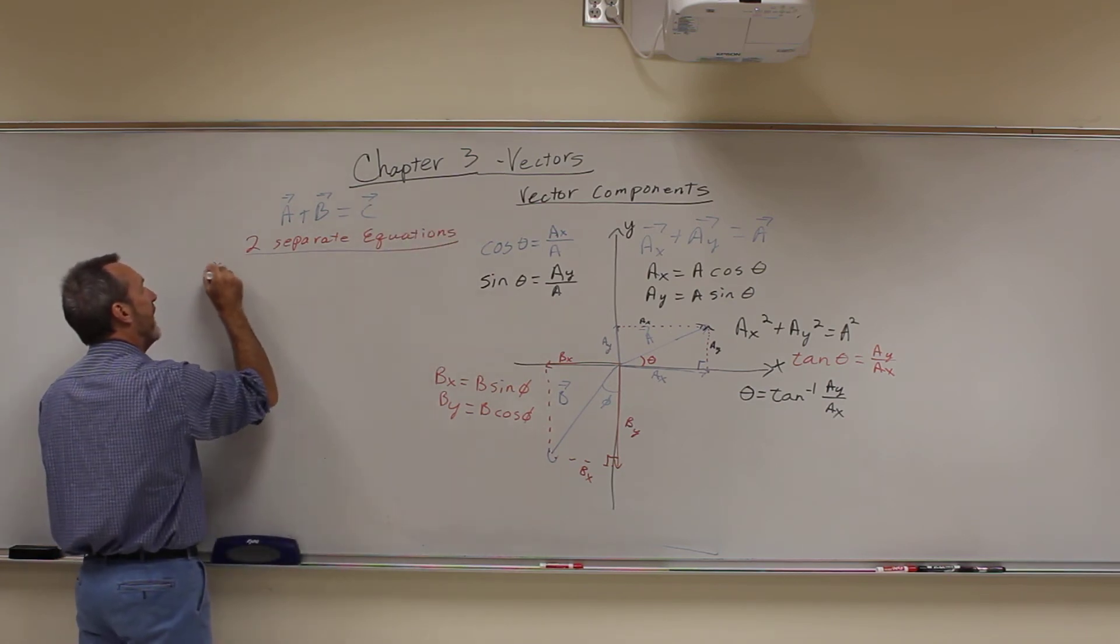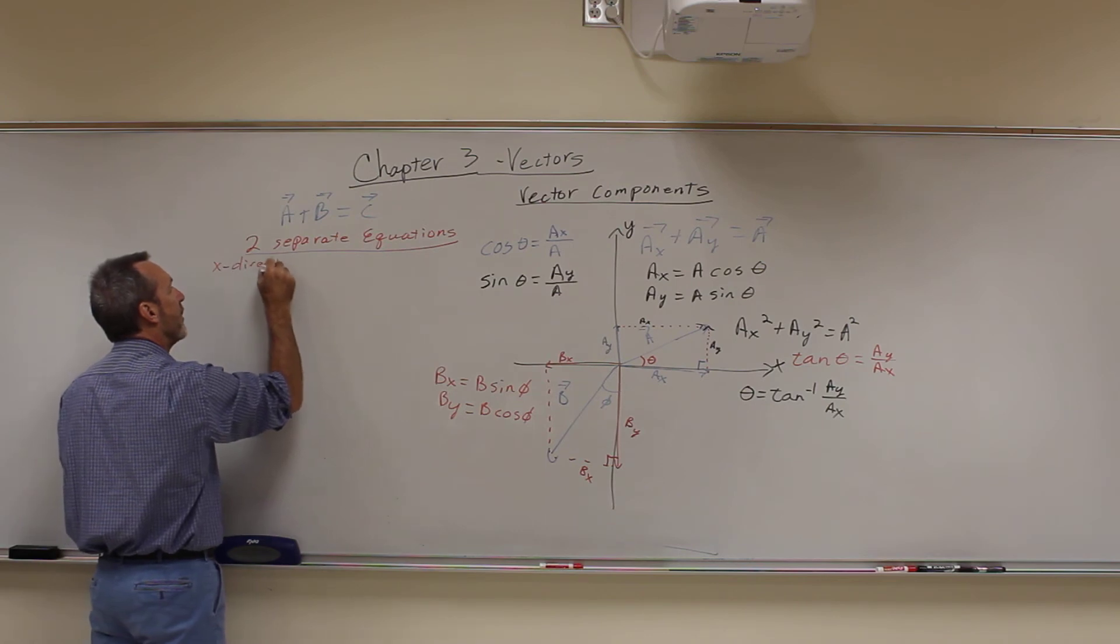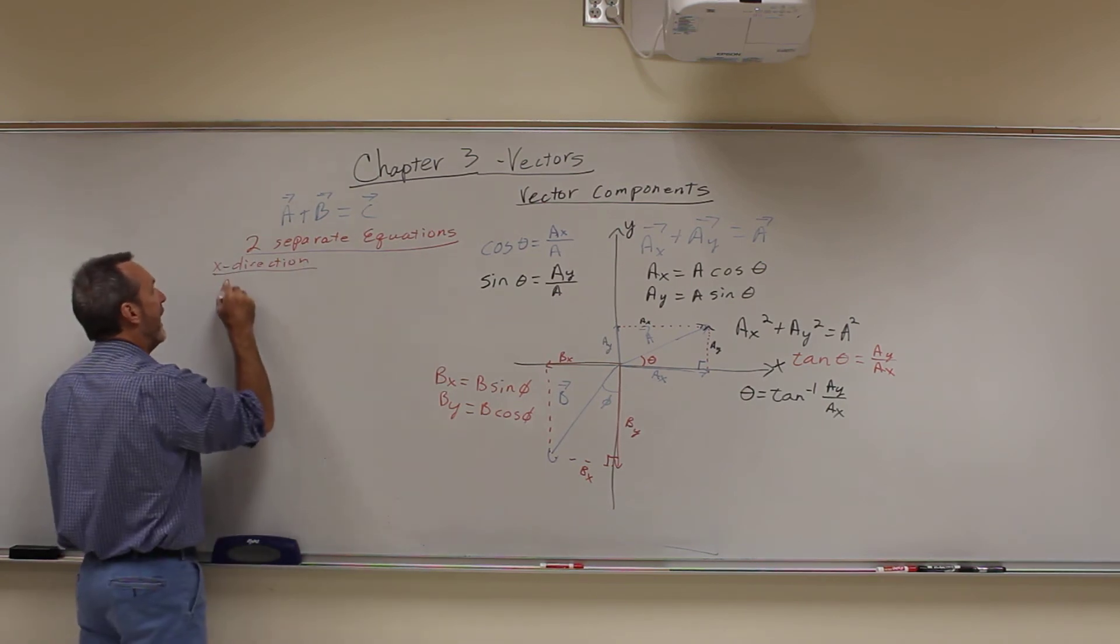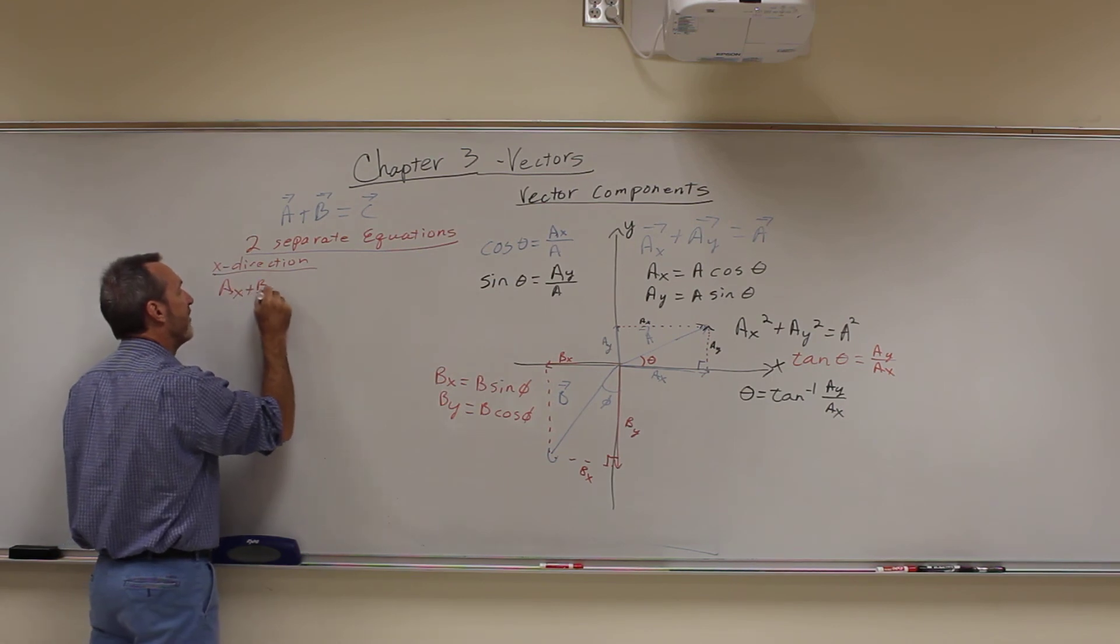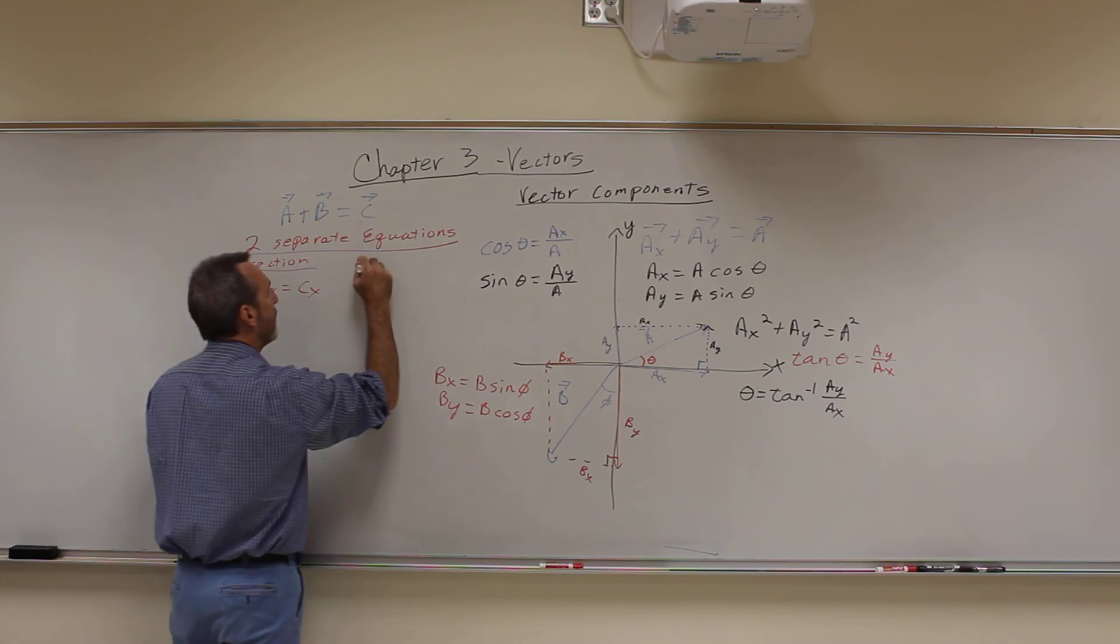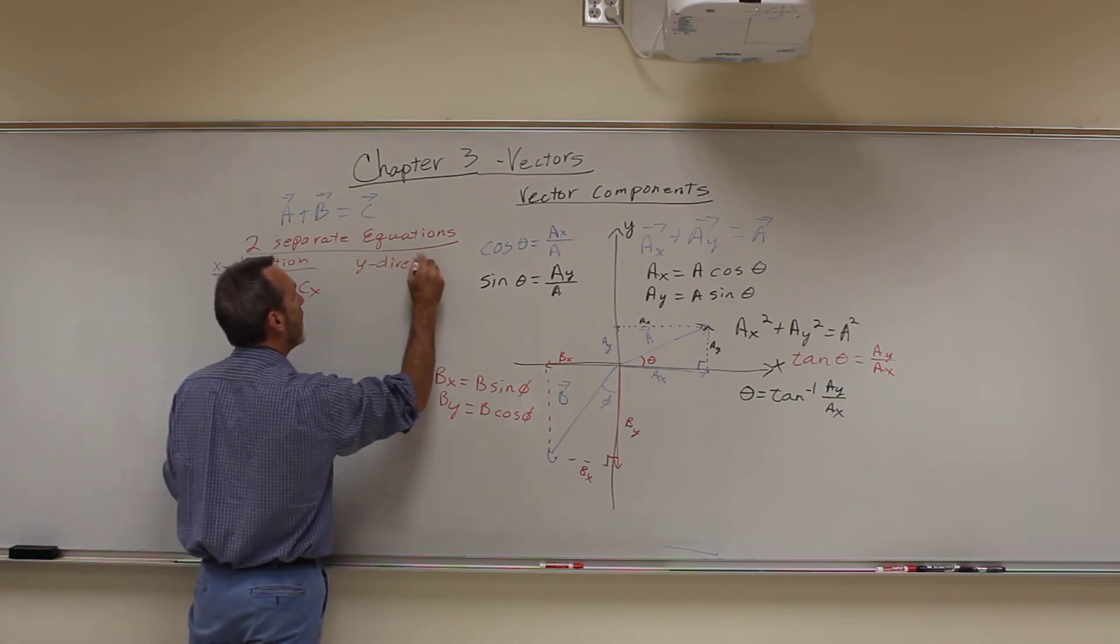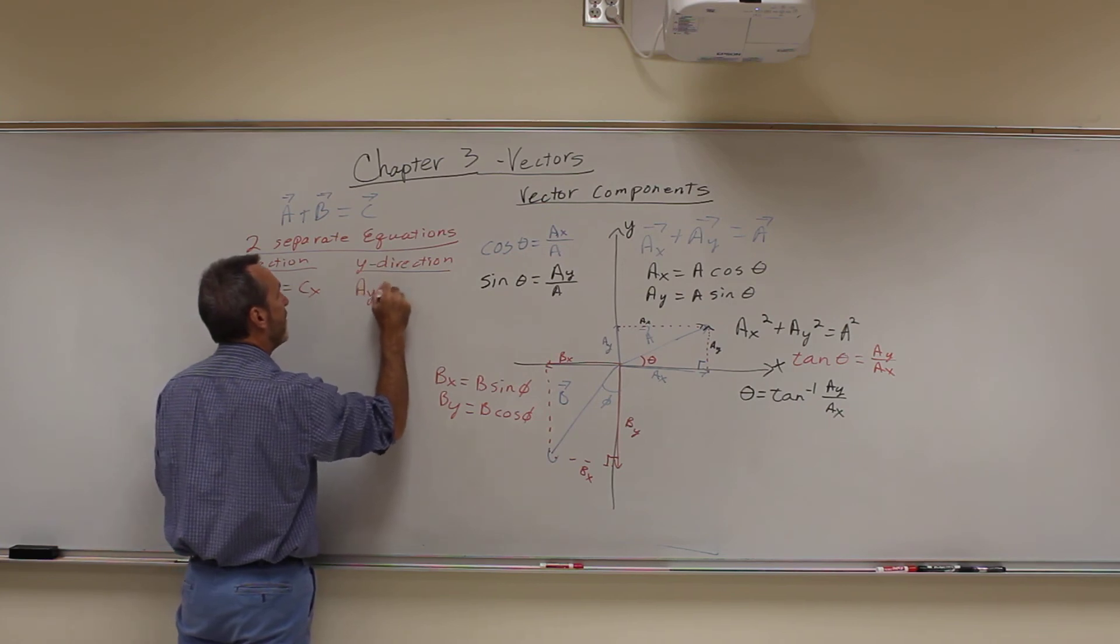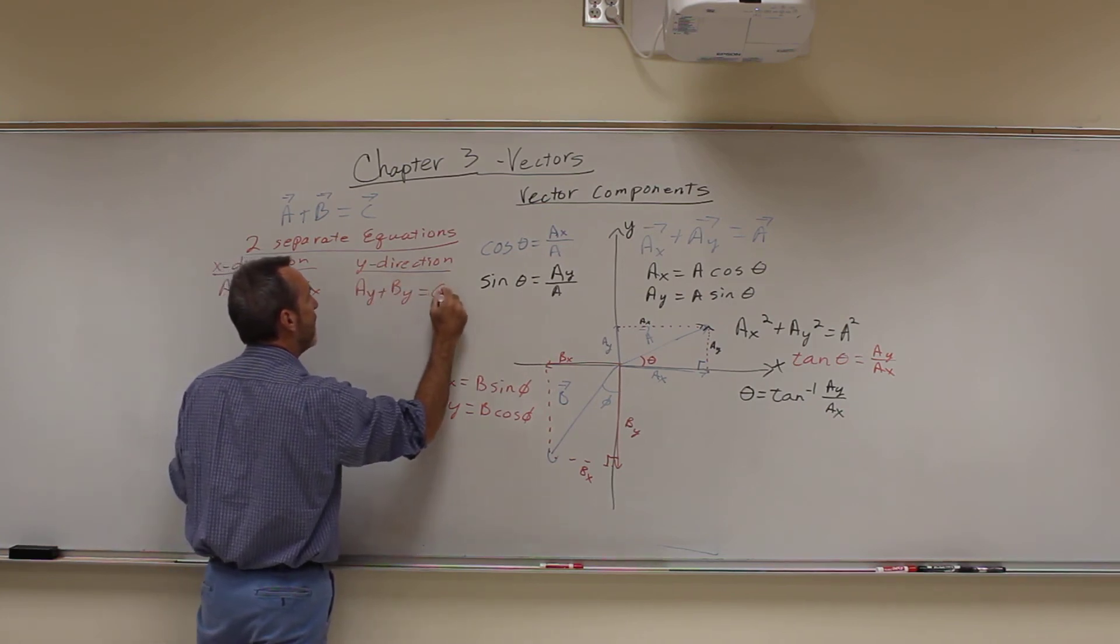So what you do it as in the X direction, this becomes AX plus BX is equal to CX. And in the Y direction, this becomes AY plus BY equals CY.